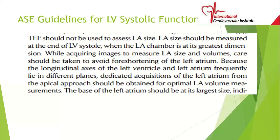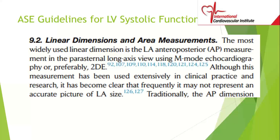When acquiring images to measure left atrial size and volumes, be careful not to foreshorten the left atrium — you want the maximum size. The most widely used linear dimension is the anterior-posterior measurement in the parasternal long axis view. You can use M-mode as well as two-dimensional echo; 2D echo is the better of the two. It is measured in end-systole when the left atrium is at its greatest dimension.